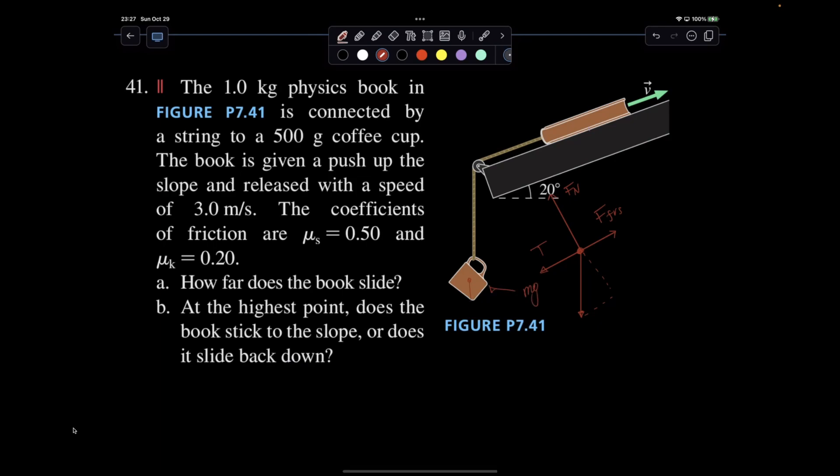Because if everything is at rest, then I have this mg and then this tension. That tension is going to be 0.5 times 9.8, 4.9 newtons.